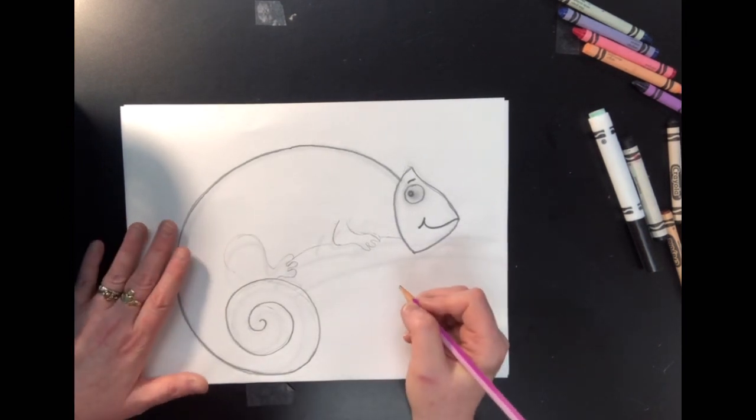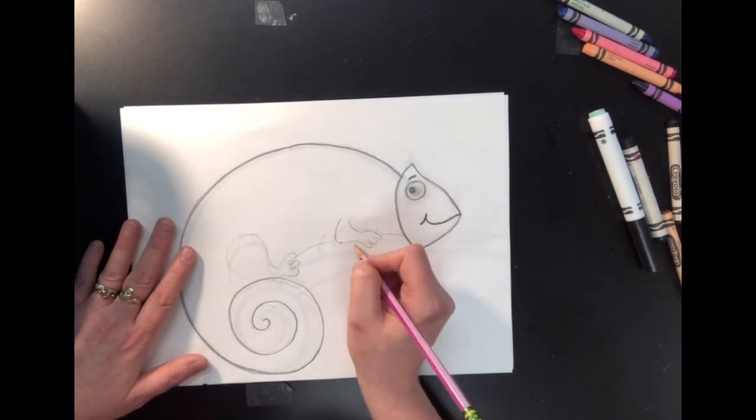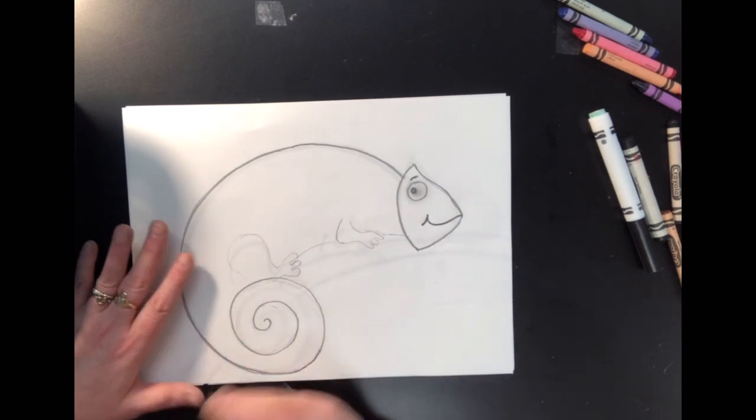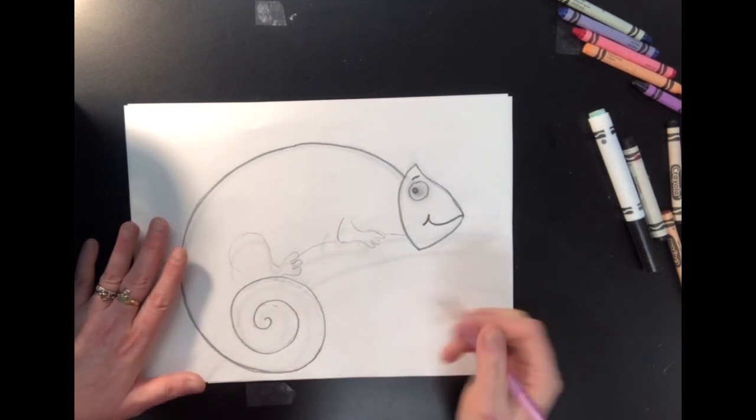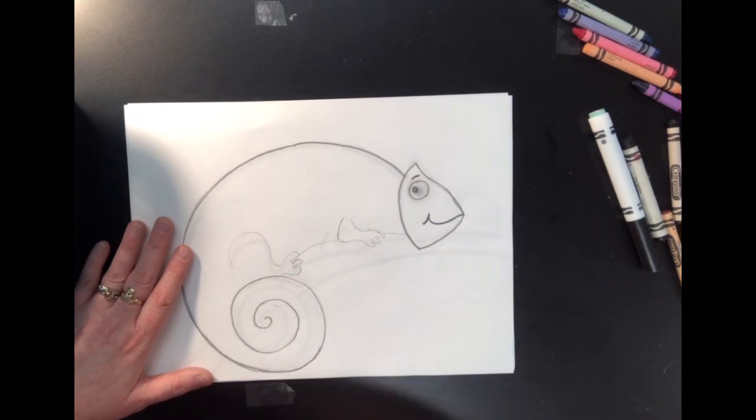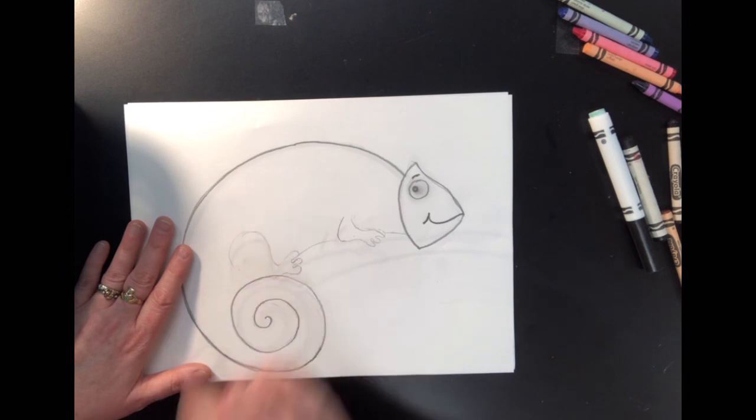So we're going to finish the body. Now the body has two legs on one side and two legs on the other side, but you can't see the other side of the body. You can only see one side. The back leg is wider and bigger than the front leg. So we're going to start with the back leg.